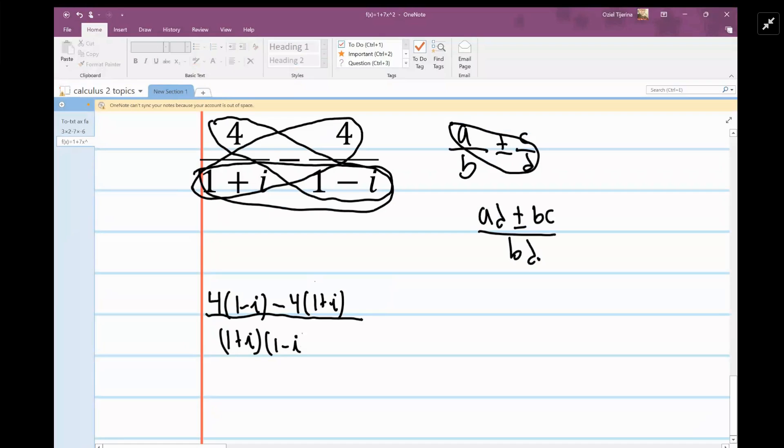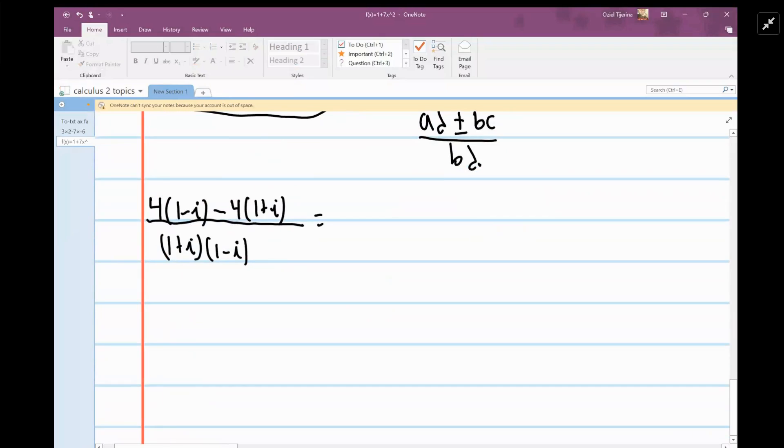Okay, so we're going to simplify it. This gives us 4 minus 4i, and then minus 4. And then it's going to be, so we're going to do minus the quantity 4 plus 4i.